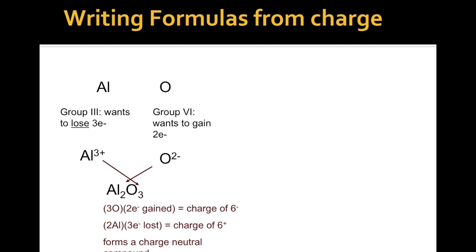We can check whether electrons are gained or lost, and it ends up charge neutral. So we have three oxygens with two electrons gained. That's six electrons total. And aluminum, there's two of them, and each loses three. So two times three is six lost. So we do have a charge neutral compound.